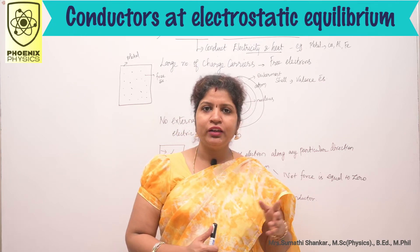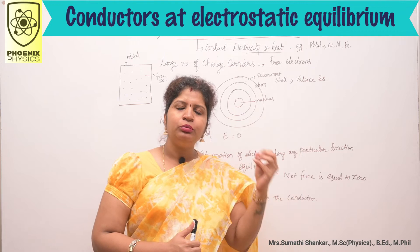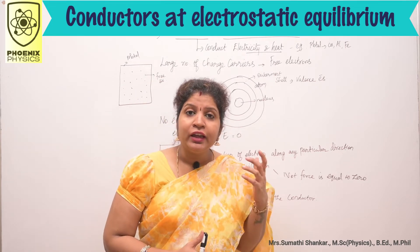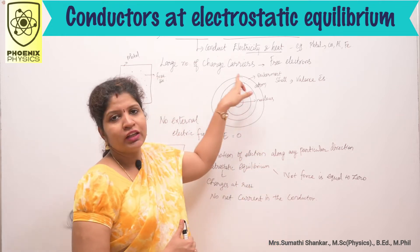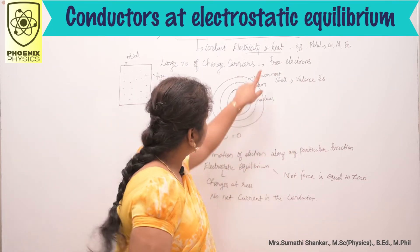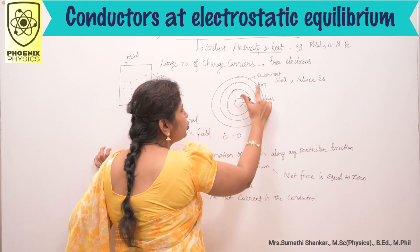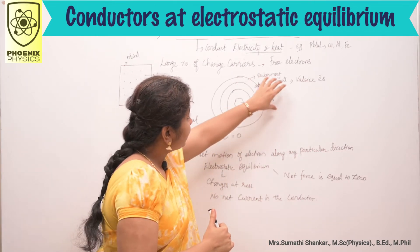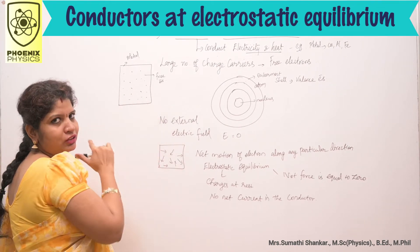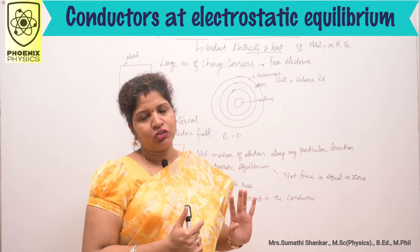You know that conductors conduct electricity and heat. Metals are very good conductors — for example, copper, aluminium, iron — all metals are very good conductors. Why do they conduct electricity? Because they have a large number of charge carriers. In a metallic conductor, these charge carriers are called free electrons, which are not bound to any atom. These free electrons are in the outermost shell, called valence electrons. They can move freely within the conductor but are not free to leave the metal. In general, conductors conduct electricity and heat because they have a large number of free electrons.